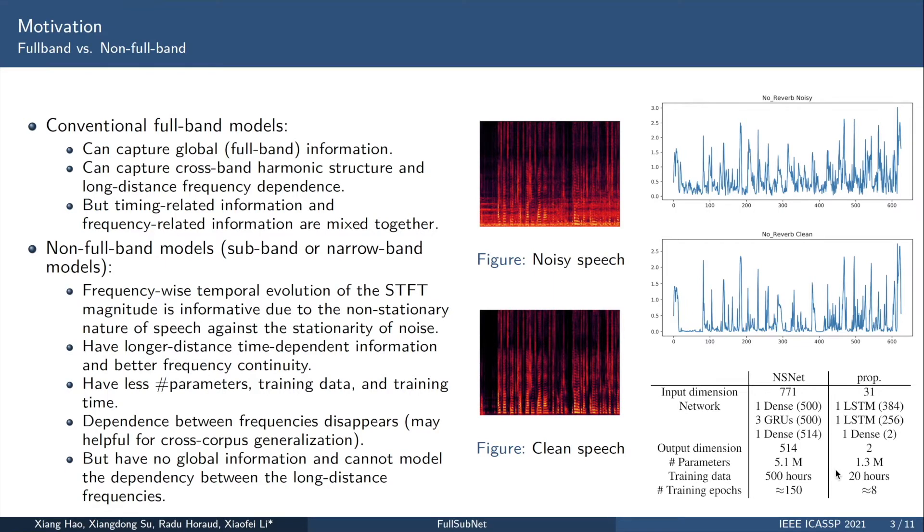In addition, according to earlier experiments, we have noticed that because the sub-band or narrow-band model's feature dimension is relatively low, the model of the same size can learn longer distance time-dependent information. This may help the model to enhance the result with better frequency continuity, which may help speech recognition. In previous work, we simply compare the full-band model and sub-band model in this table. When the same performance is achieved, the amount of parameters and training data and training epochs required by the sub-band model are less. This may be due to the reduction of the input feature dimension, reducing the difficulty of modeling.